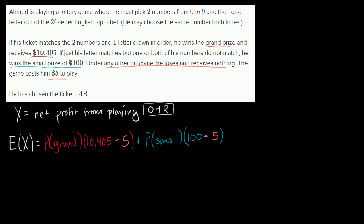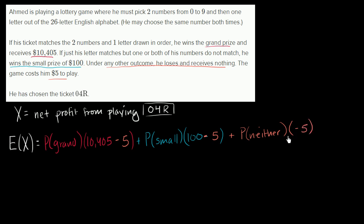And then finally, you have the probability of neither — essentially not winning. In that situation, your net profit is negative $5: you paid $5 and got nothing in return. So to figure out the expected value, you just have to figure out these probabilities.